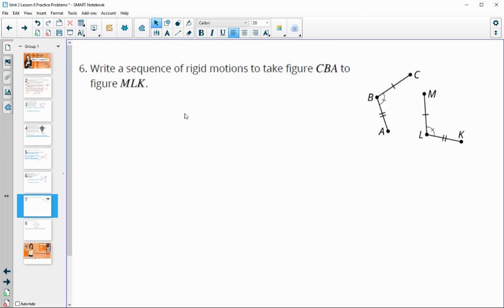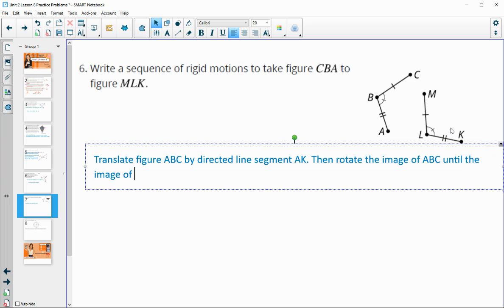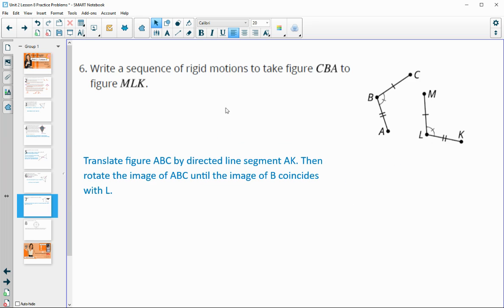Write a sequence of rigid motions that would take CBA on to figure MLK. So we need to get them touching. So we're going to need to translate figure ABC by directed line segment. And you can pick what you want. I'm going to get A to land on K. So AK. Then rotate the image of ABC until the image of B coincides with L. So I moved A onto K. And then I rotated it until B landed on L. And then that'll get you to have the whole thing on top of you. That'll get ABC to land on KLM.